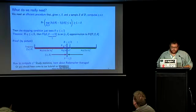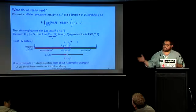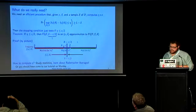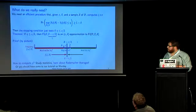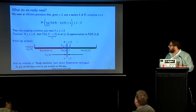What we actually need is an efficient procedure such that, given epsilon and delta fixed by the user, and given a sample, we compute a value eta such that with probability at least 1 minus delta, the maximum deviation between the frequency of an itemset in the sample and its frequency in the full dataset — the maximum over all itemsets — is bounded by eta. Then we can stop sampling when eta is less than epsilon over 2.